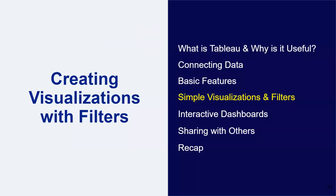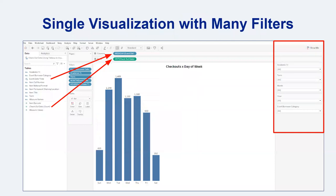The real magic happens in Tableau once you create some simple visualizations and then add filters. In this screenshot, we're looking at a simple visualization of the number of checkouts based on day of week. You can see we use the event date time field and put it into the column section to narrow down the data to day of week. You can also use this same field to select year, quarters, months, weeks, specific dates of a month, hours, and more. On the right, highlighted in red, you can also see different filters that I added, including academic year, term, month, hour, and borrower category.